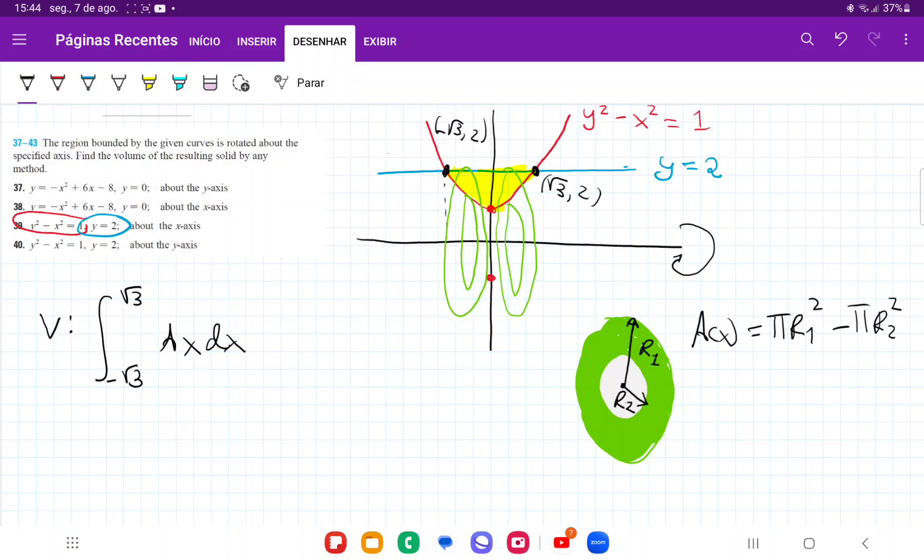So all we have to do now is to figure out what r1 and what r2 are. So we can see here that the outer radius r1 is going to go from 0 all the way out to 2. And regardless where I'm at on my x-axis, it's always going to go from 0 all the way out to 2. Therefore, my area is going to be pi times 2 squared for my r1 minus pi.